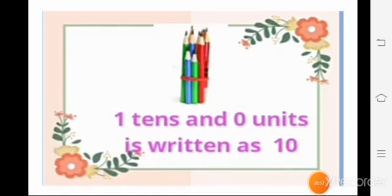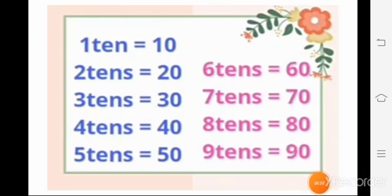The one tens and zero units is written as one zero, ten. How do we write one ten and zero unit in numbers? We write 10, one zero. See here how we write one ten as the number 10. Then how do we write two tens in numbers? Two zero, twenty. That means two bundles of ten we call two tens, and we write it in numbers as two zero, twenty.